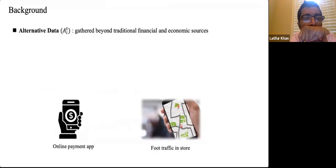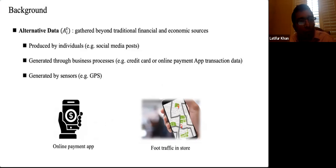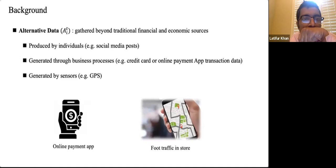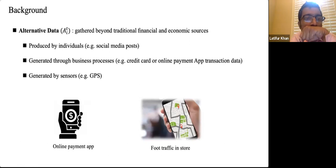We need valuable data to predict unexpected revenue. One key source is alternative data, gathered beyond traditional financial and economic sources, divided into three categories: data produced by individuals such as social media posts; data generated through business processes; and data generated by sensors like GPS. We formulate the problem as follows: given data from company i denoted X_it — which is a collection of historical data C_{t-1}, analyst estimation features VE_t, and alternative data A_t — the objective is to find a function F that predicts the unexpected revenue.